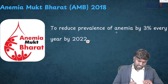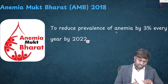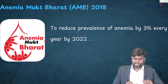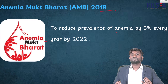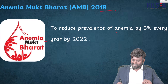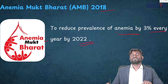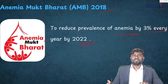This image showing blood droplets is going to be called Anemia Mukt Bharat, which was introduced in 2018. It aims to reduce the prevalence of anemia by 3% every year by 2022.